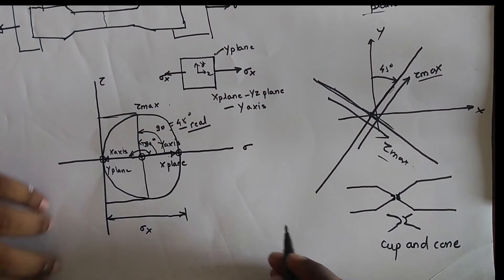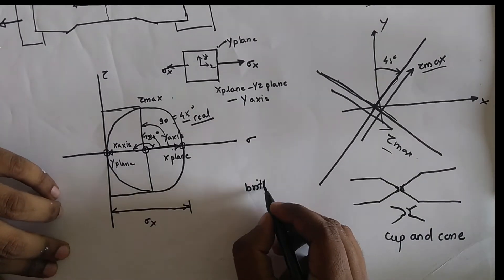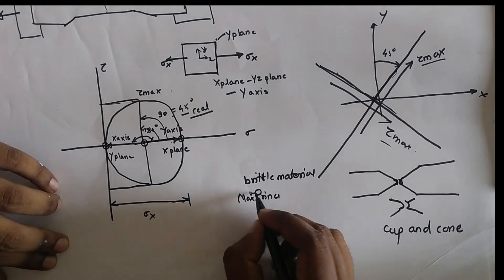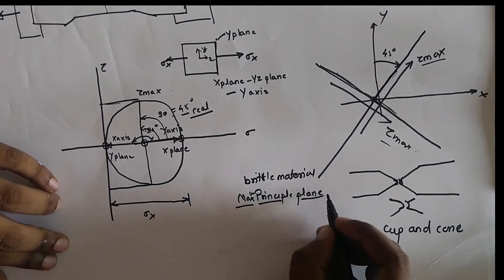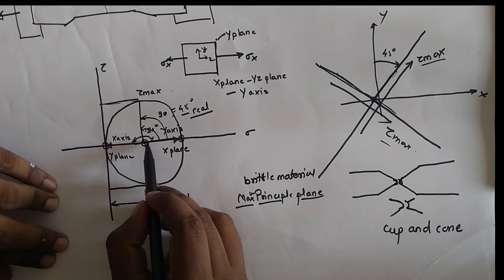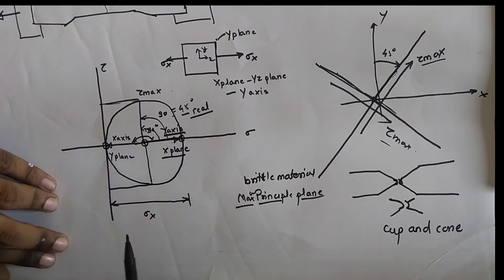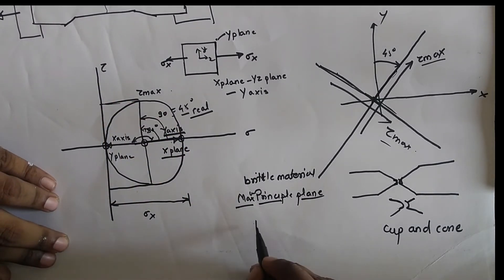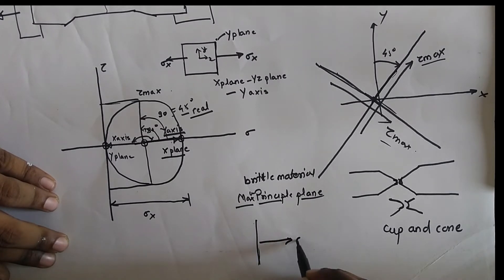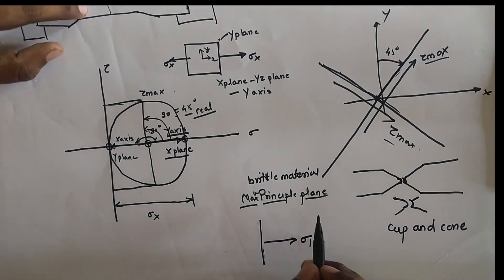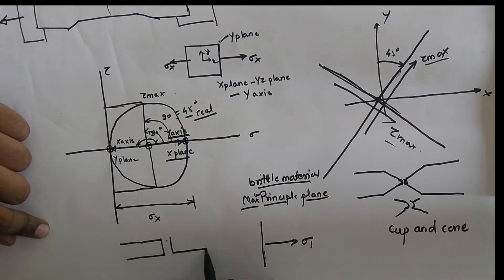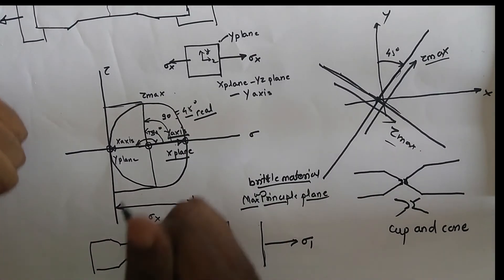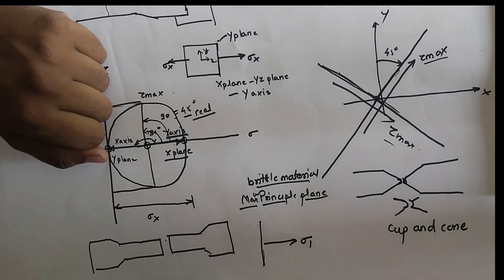For brittle material, brittle material always fails due to maximum principal stress, and it fails in the maximum principal plane. The maximum principal plane is acting at the y-axis on the Mohr's circle. So brittle material will automatically fail perpendicular to the cross-section. The maximum principal plane is where sigma 1 is acting, so the tensile test specimen for brittle material will always fail straight across, perpendicular to the cross-section. For example, a cast iron specimen, when pulled, will fail straight like this.